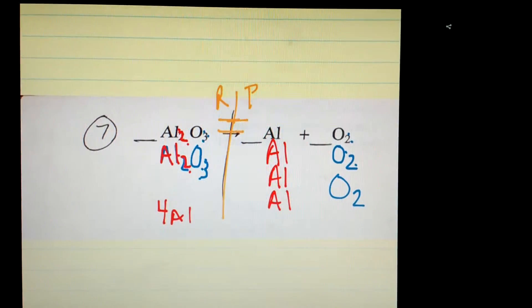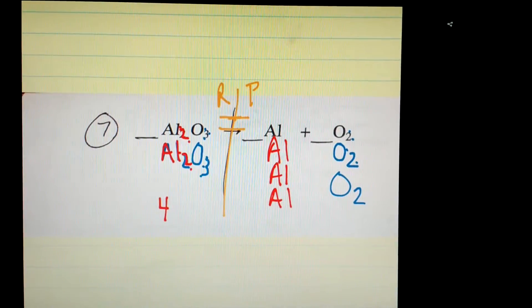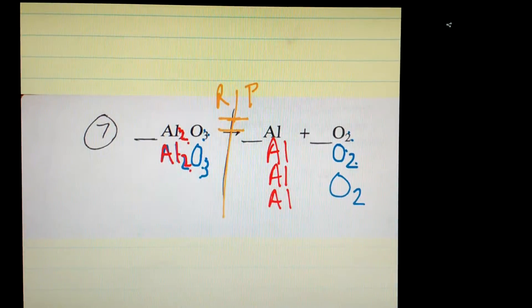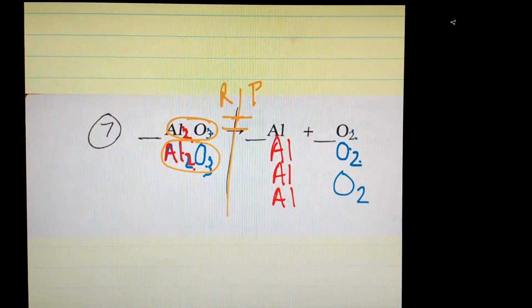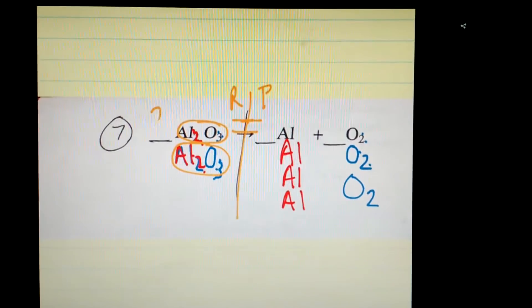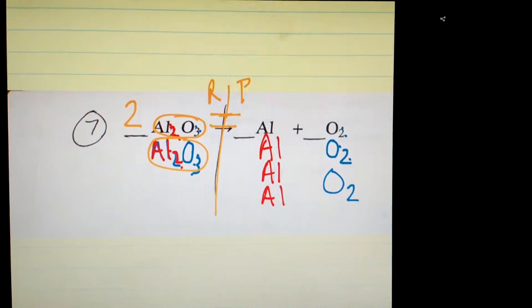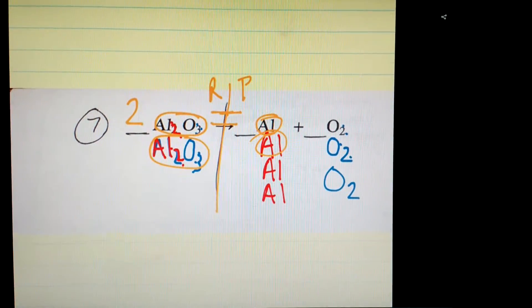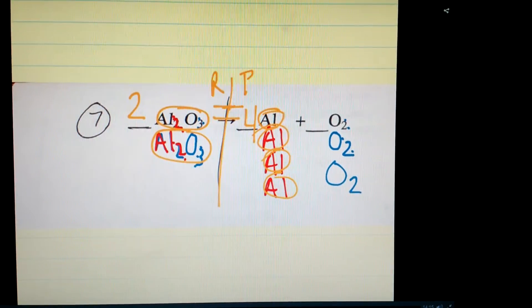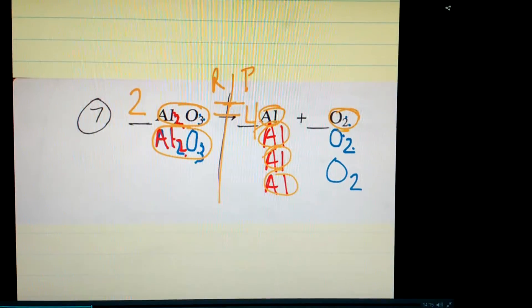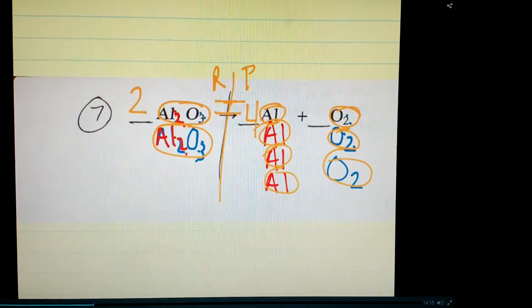If you put in coefficients, the way I think of it is I think how many times was the molecule of aluminum oxide written? And it was written four times. And lastly, how many times did you have oxygen written?